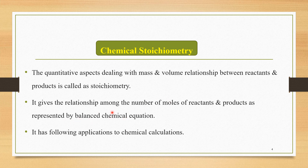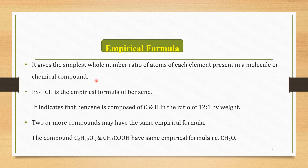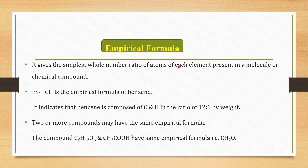Chemical stoichiometry has the following applications to chemical calculations. The first is empirical formula. Empirical formula gives the simplest whole number ratio of atoms of each element present in a molecule or chemical compound.